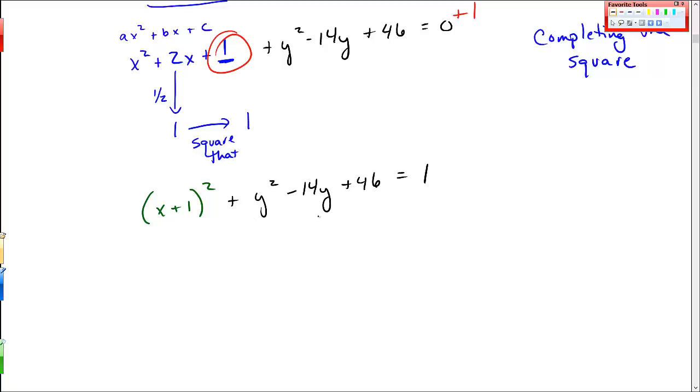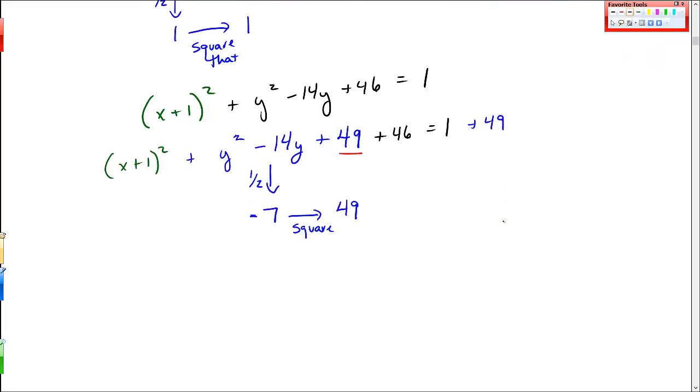So, now I want to do the same thing to this y^2 piece. So, if you got it the first time, try and do it by yourself. If you didn't, then follow along with me again: (x+1)^2. And then here's my piece that I'm going to work with: y^2 - 14y. And then I have to add something. The thing that I'm going to add, I take this b piece, I half it, and I get -7. And then I square it to get 49. And so I have to add 49 right here. I still have this +46. And I still have 1. And because I added 49 here, I also have to add 49 on the other side.